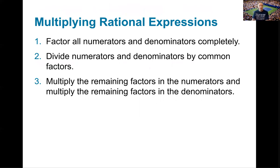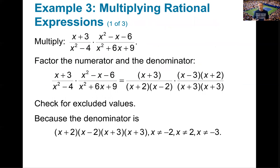Now, multiplying rational expressions. We factor all numerators and denominators just like we did when we simplified, then cancel out any common terms, and multiply the remaining factors in the numerator and denominator throughout the entire problem. If you have multiple numerators you multiply across all numerators, and the same thing in the denominators.